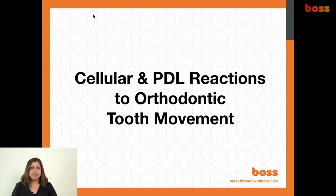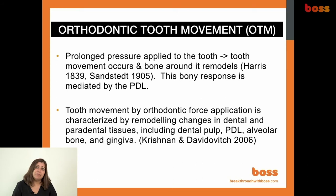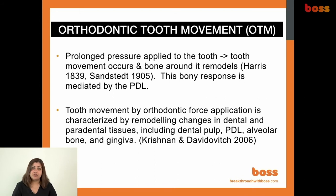What are the cellular and periodontal reactions to orthodontic tooth movement? This is one of the most critical things to learn as a diploma graduate or in any orthodontic course. It is the basis of tooth movement. Orthodontic tooth movement is derived from prolonged pressure applied to the tooth. The tooth moves and bone remodels around it, characterized by remodeling changes in dental and paradental tissues including pulp, PDL, and a mild inflammatory reaction involving the gingiva.